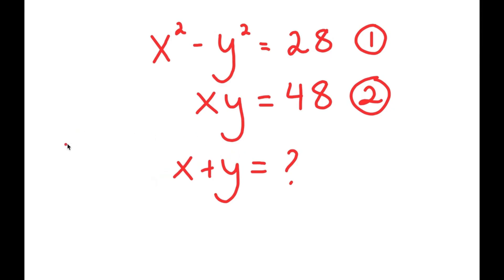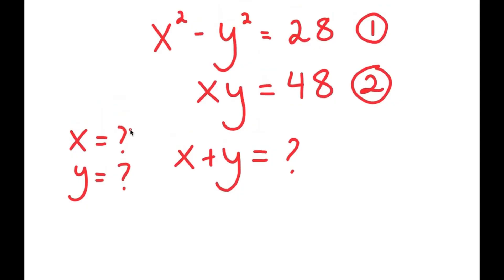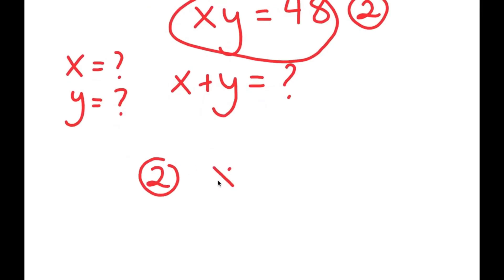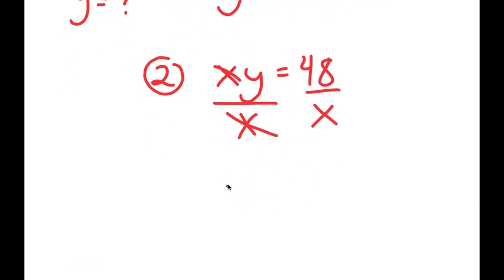Finding this is fairly simple once we find the value of x and the value of y. To start, I'm going to use equation two: x times y equals 48. I'll solve for one variable in terms of the other — in this case, I'll solve for y by dividing both sides by x. So I get y is equal to 48 over x.